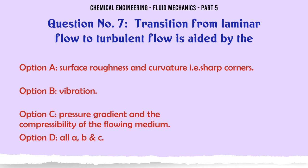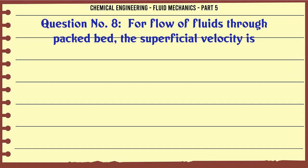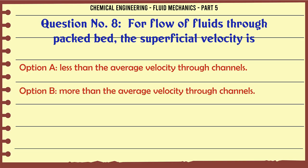Transition from laminar flow to turbulent flow is aided by the: a) surface roughness and curvature i.e. sharp corners, b) vibration, c) pressure gradient, d) compressibility of the flowing medium. The correct answer is all a, b, c.